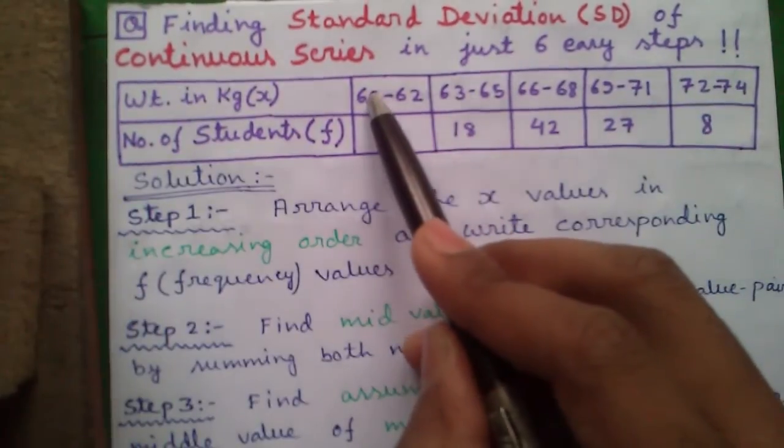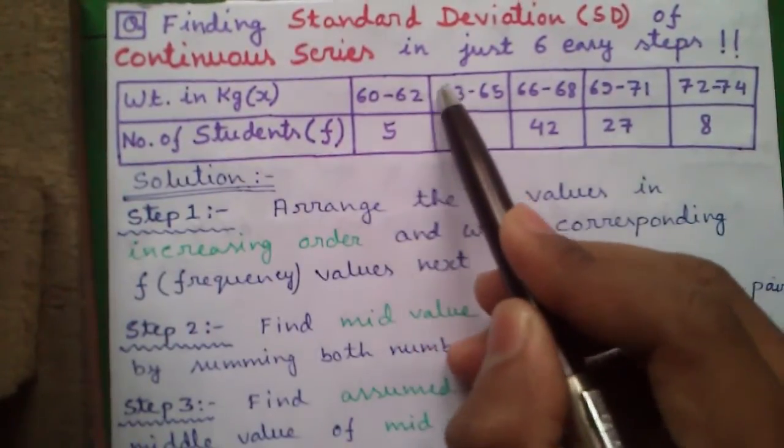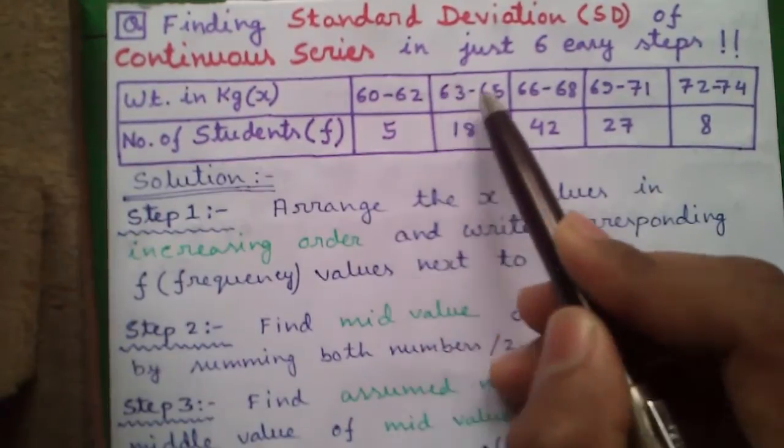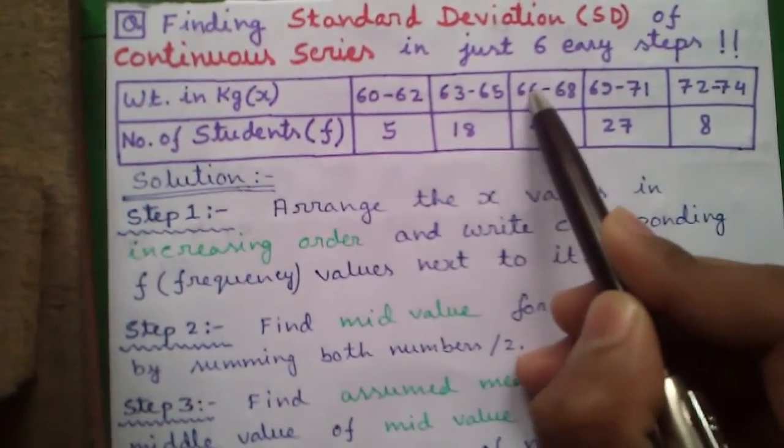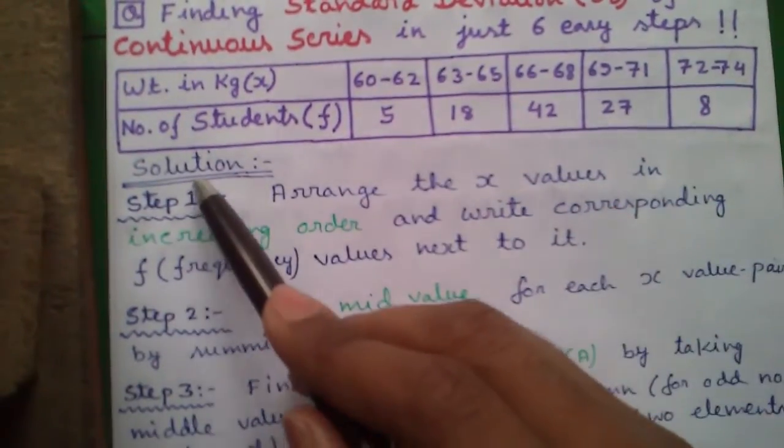It's called continuous series because the first number is ending in 62 and next number is starting from 63. Similarly second number is ending in 65 and third number is starting from 66 and so on. So let's proceed to our solution.